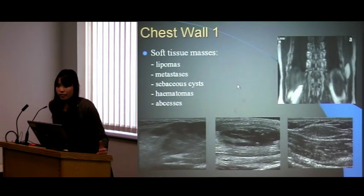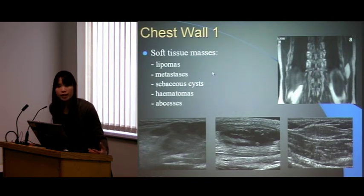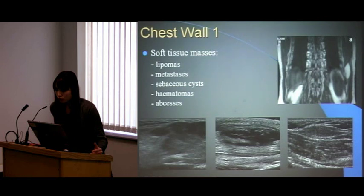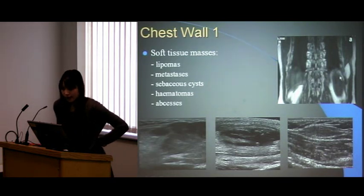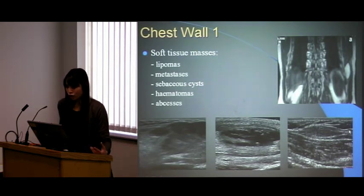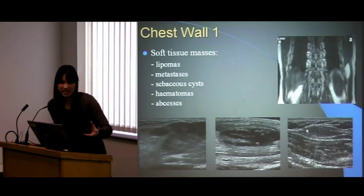Chest wall soft tissue masses: benign lesions are not entirely common — things like lipomas and sebaceous cysts. Other things are metastases — you can get soft tissue metastases — and if the patient had trauma there could be a hematoma, which if left long enough could turn into an abscess. Lipomas are usually well-defined in the subcutaneous tissue layer; just pop color on to make sure it's not anything more malignant.